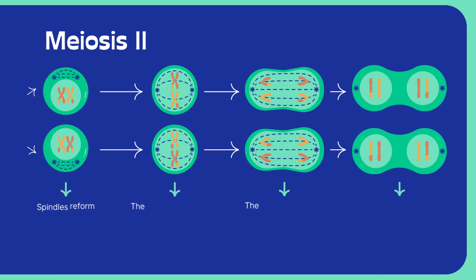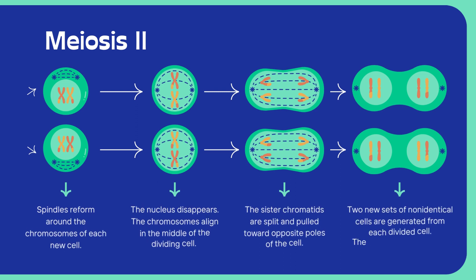Meiosis II. Spindles reform around the chromosomes of each new cell. The nucleus disappears. The chromosomes align in the middle of the dividing cell. The sister chromatids are split and pulled toward opposite poles of the cell. Two new sets of non-identical cells are generated from each divided cell. The nucleus starts to form around each new cell.